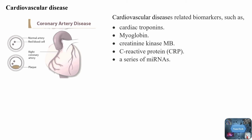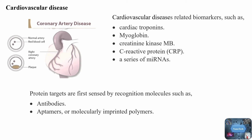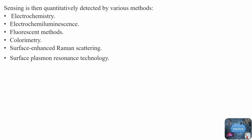Therefore, one promising approach for the early diagnosis of cardiovascular diseases is to develop precise, specific, simple, stable, and rapid analyses of blood for such molecules. Protein targets are first sensed by recognition molecules such as antibodies, aptamers, or molecularly imprinted polymers, and the sensing is then quantitatively detected by various methods including electrochemistry, electrochemiluminescence, fluorescent methods, colorimetry, surface-enhanced Raman scattering, and surface plasmon resonance technology.